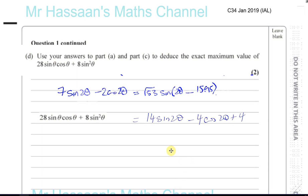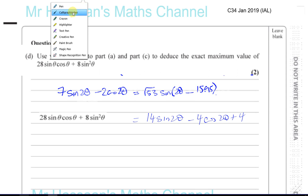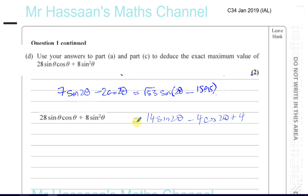Okay, so now we have question number one part D from January 2019. It's telling us to use the answers to part A and to part C to deduce the exact maximum value of 28 sine theta cosine theta plus 8 sine squared theta. Here's the answer to part A and here's the answer to part C.